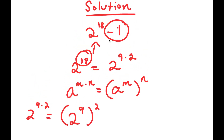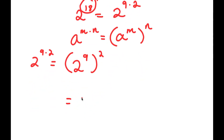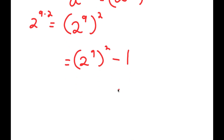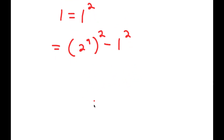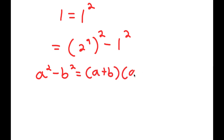Going back to my original problem with the minus 1, I get 2 to the power of 9 to the power of 2 minus 1. Now, 1 is the same thing as 1 squared, so I'm going to rewrite 1 as 1 squared. So I get 2 to the power of 9 squared minus 1 squared. The reason I did that was because now I can use the property: a squared minus b squared is equal to a plus b times a minus b.